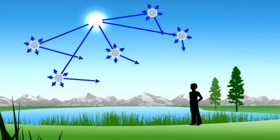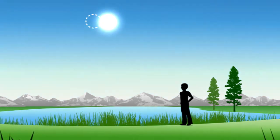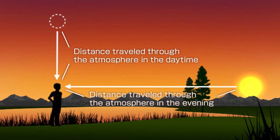But why does the sunset appear red? In the evening, the sun is close to the horizon, and the sunlight passes through the atmosphere for a greater distance than in the daytime.